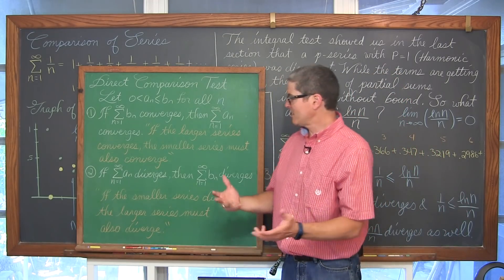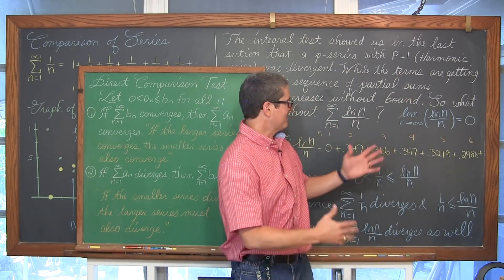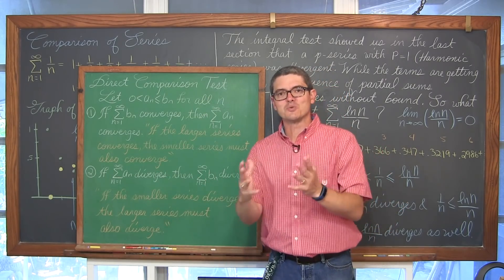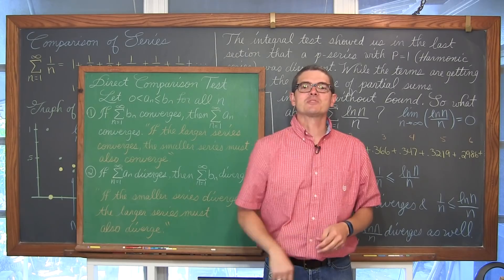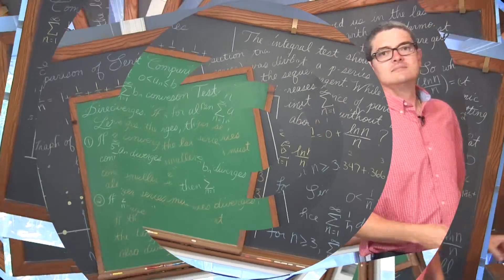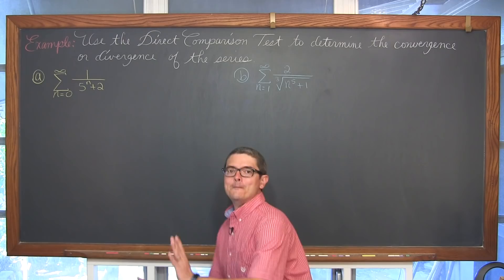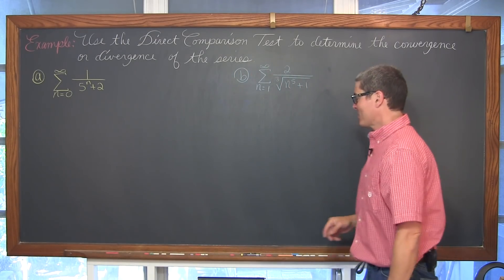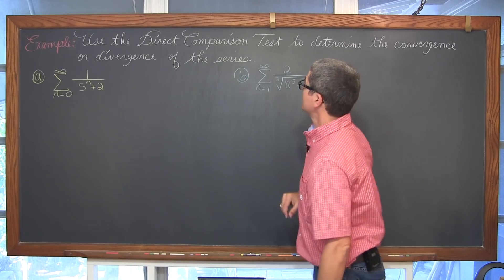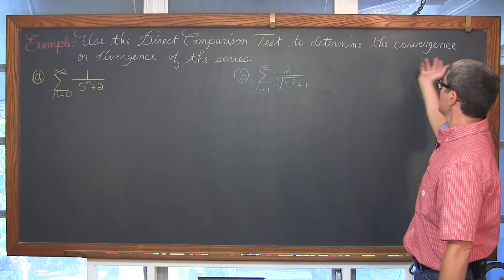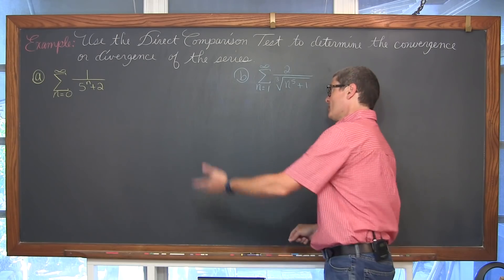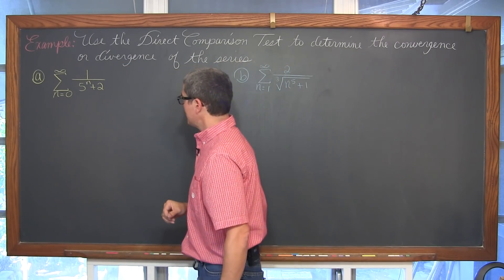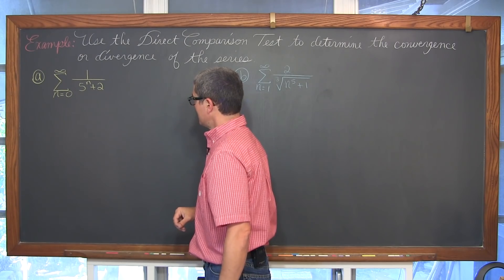I hope I didn't take an easy concept and make it seem overcomplicated by comparing this series to the harmonic series — I was hoping the visuals would help. Now I've got two more examples. We're going to use the direct comparison test to determine the convergence or divergence of the series 1 over (5^n + 2).